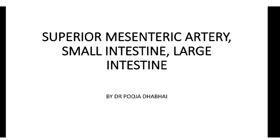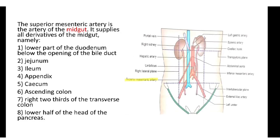Today's topic is about the superior mesenteric artery, small intestine, and large intestine. The superior mesenteric artery is the artery of the midgut. It supplies all derivatives of the midgut, namely the lower part of the duodenum below the opening of the bile duct, jejunum, ileum, appendix, cecum, ascending colon, and right two-thirds of the transverse colon, and the lower half of the head of the pancreas.